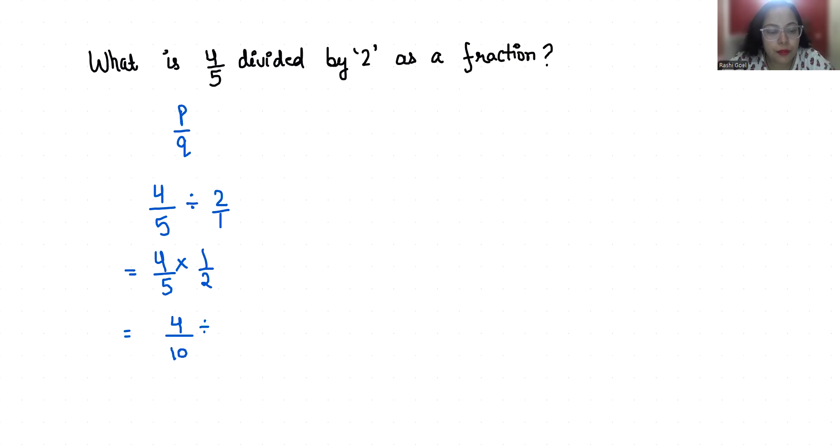Now we can reduce it by dividing it by 2 in numerator as well as denominator. So it is 2 by 5. So 4 by 5 divided by 2 as a fraction is 2 by 5.